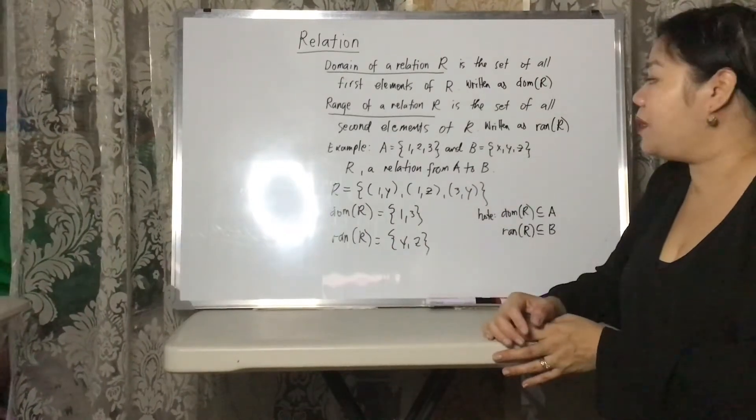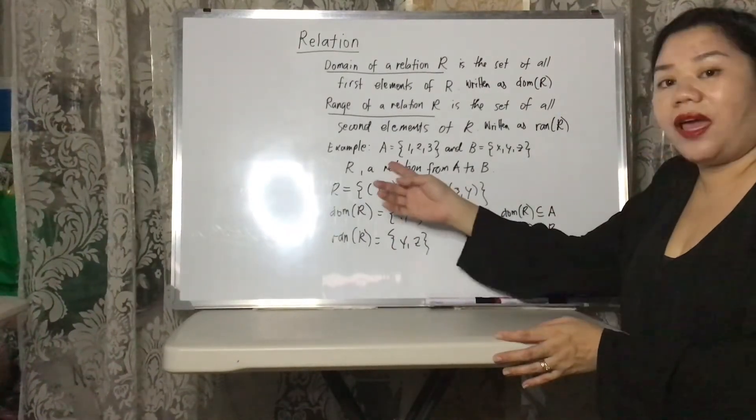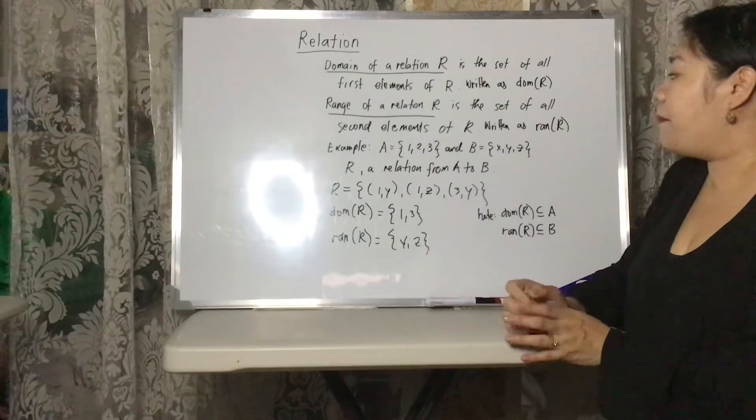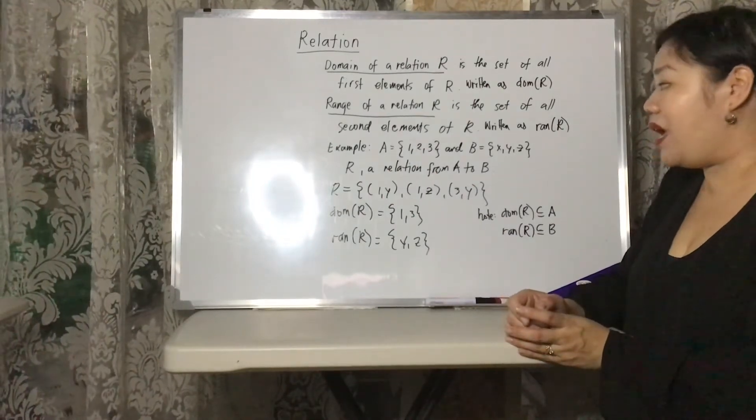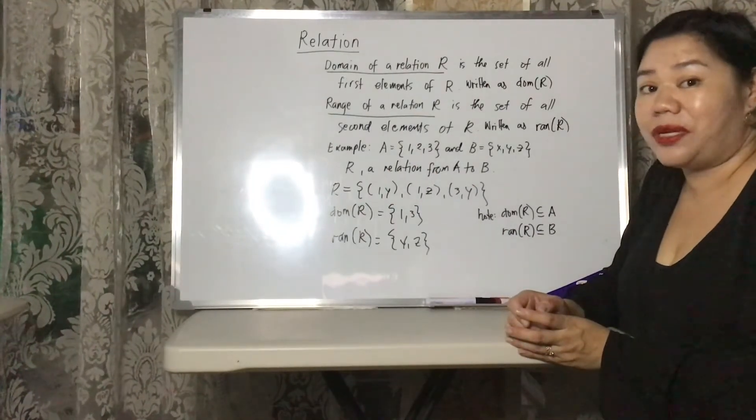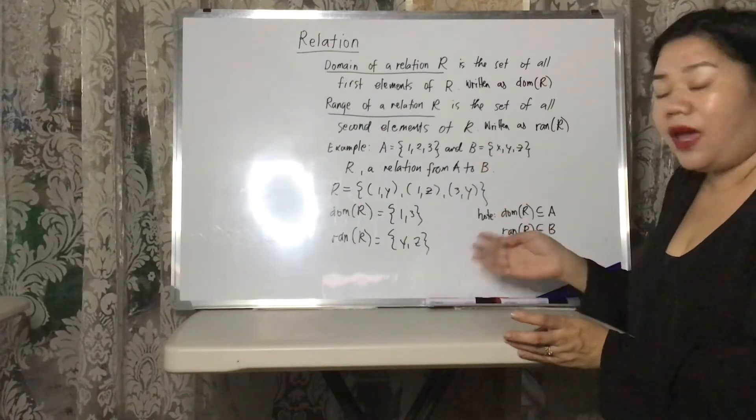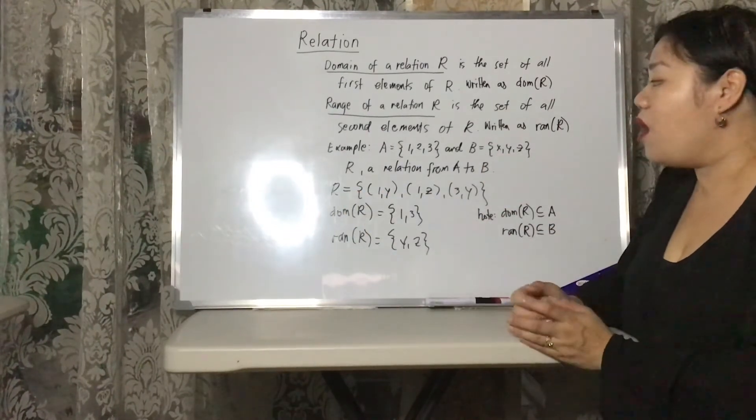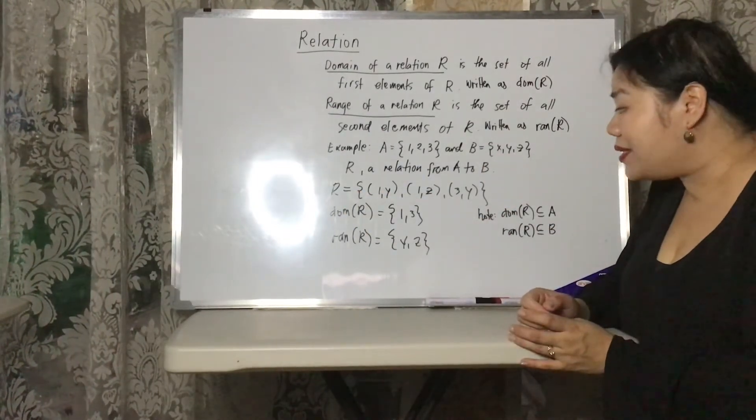Okay, so let's take an example. For instance, we have the set A: 1, 2, 3, and the set B: X, Y, Z. And our relation R is a relation from A to B. And here are the elements of R: 1Y, 1Z, 3Y.